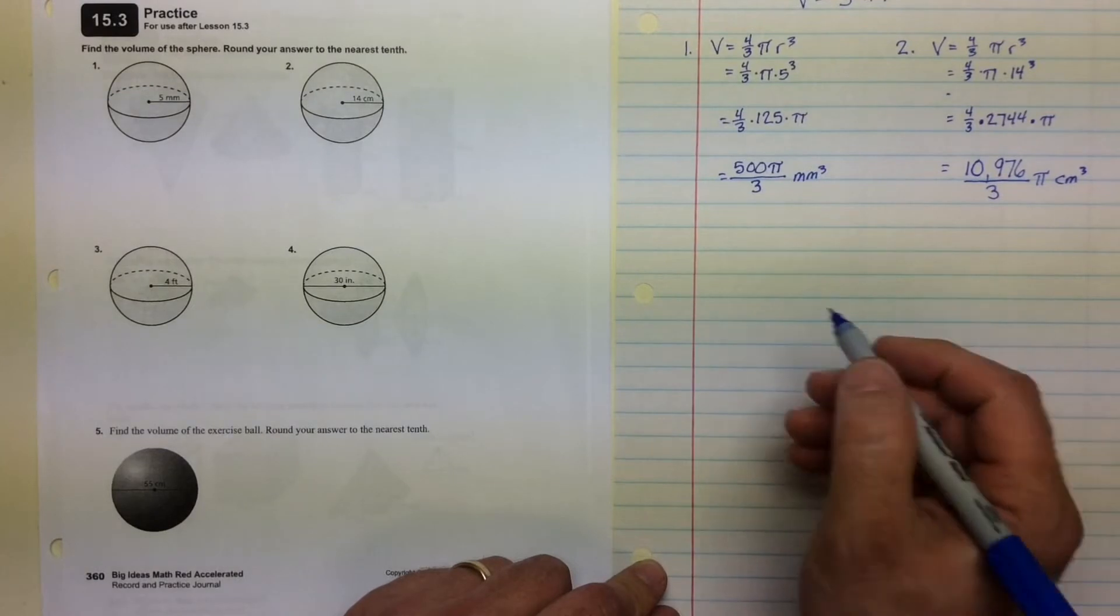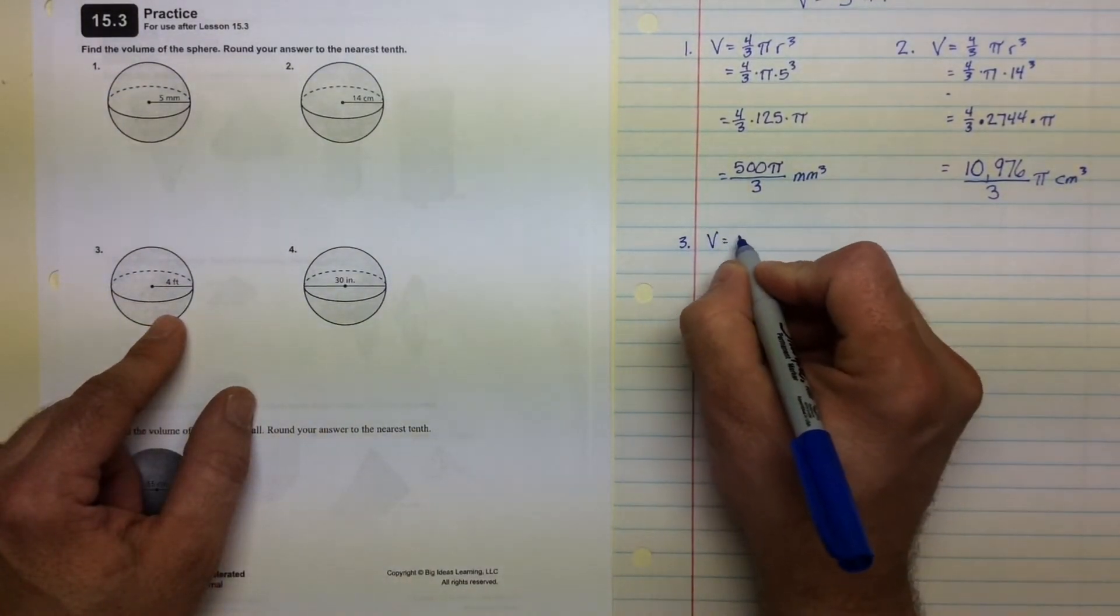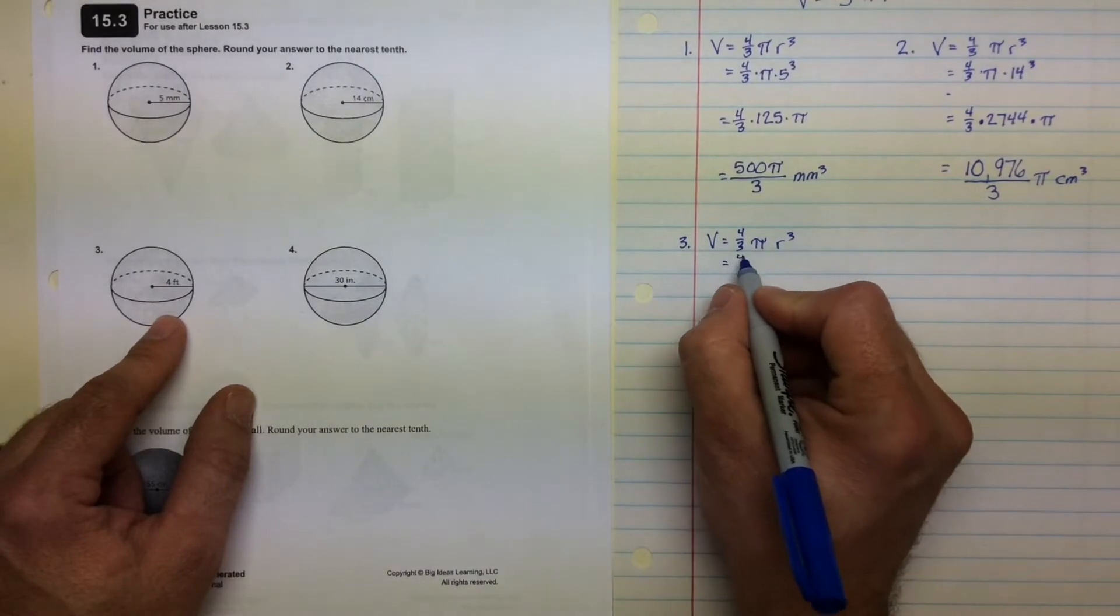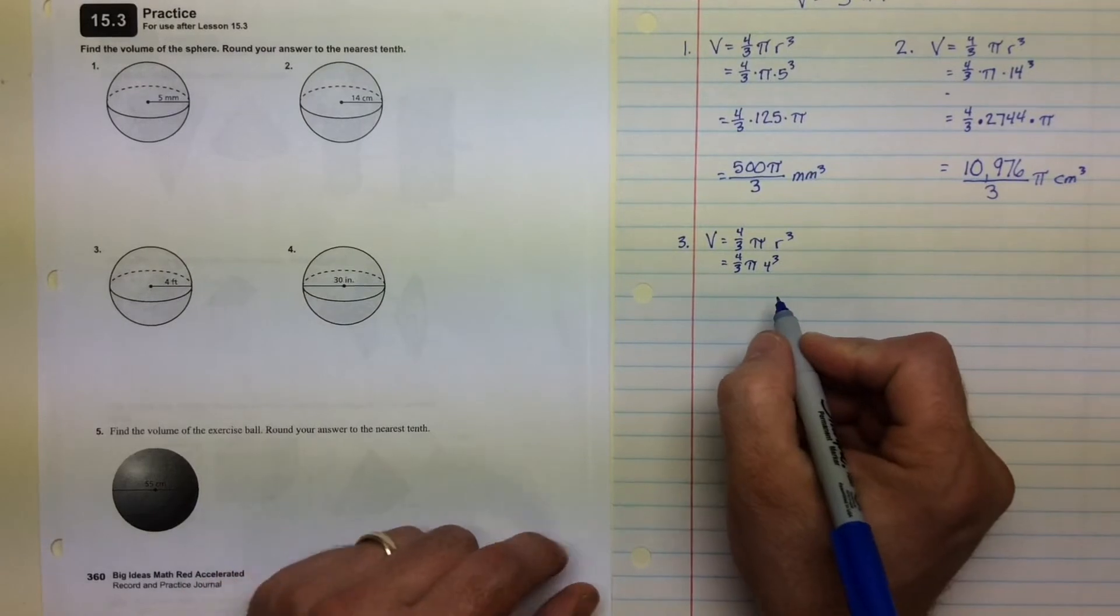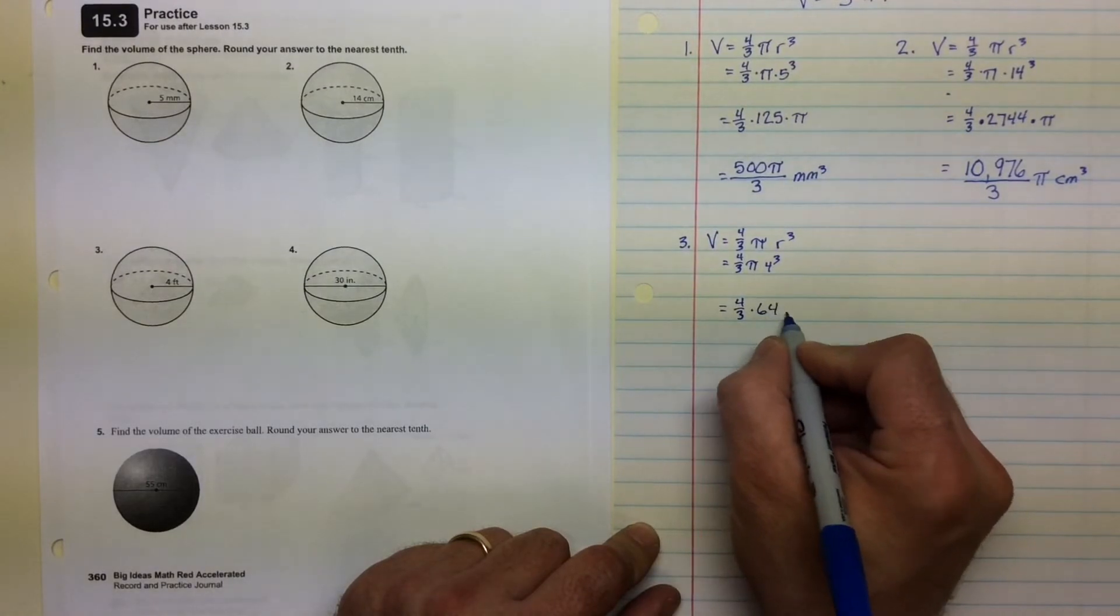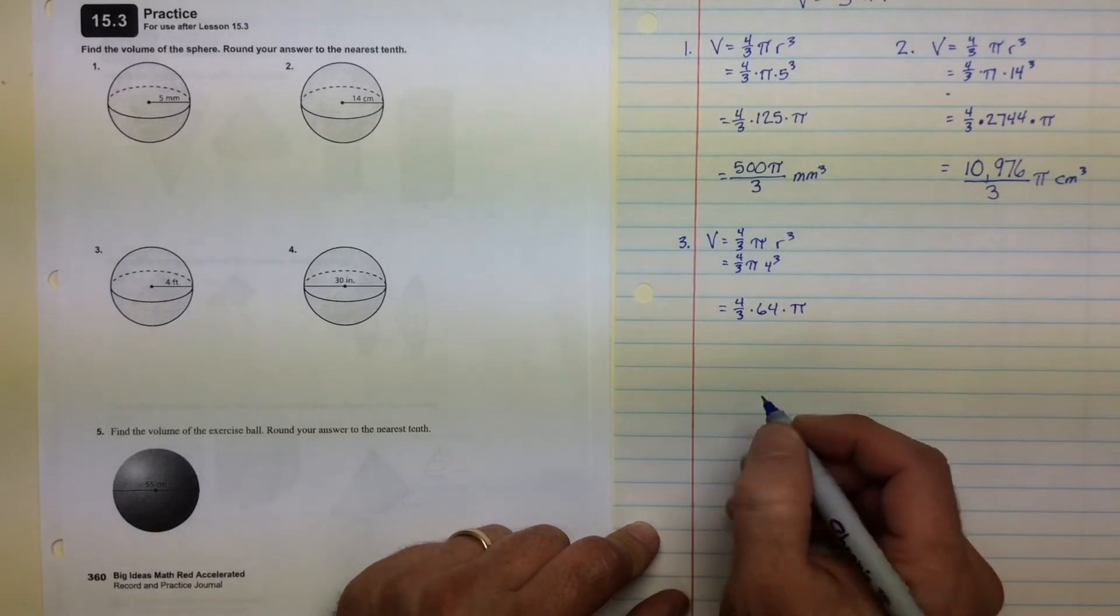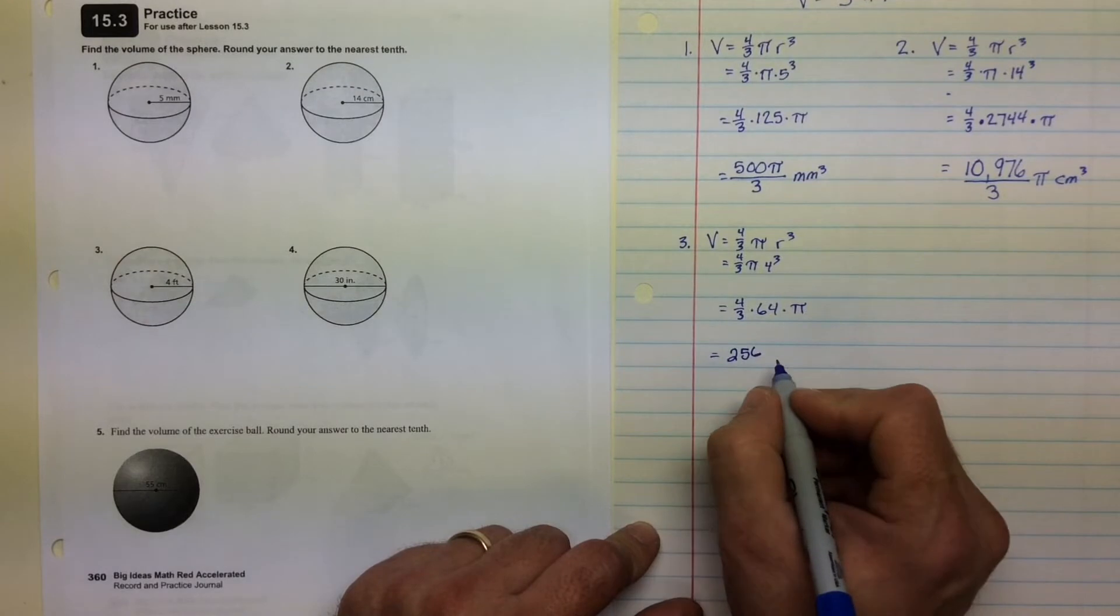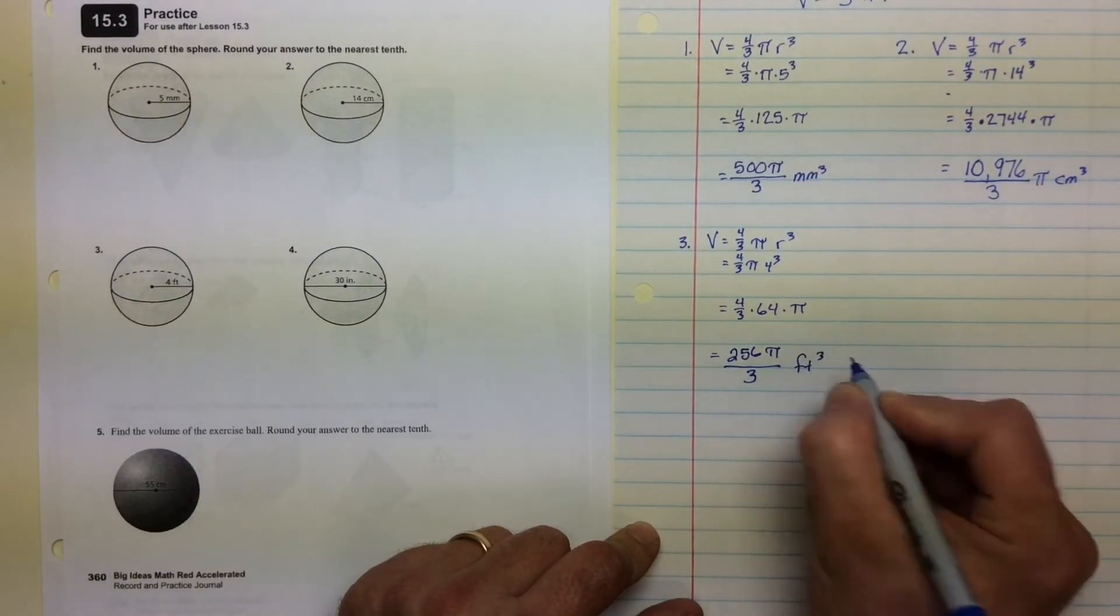Number 3. Volume equals four-thirds pi r cubed, four-thirds pi 4 cubed. Well, 4 cubed is 64, so this becomes four-thirds times 64 times pi. Not divisible by 3, but 4 times 64 is 256 pi over 3 feet cubed.